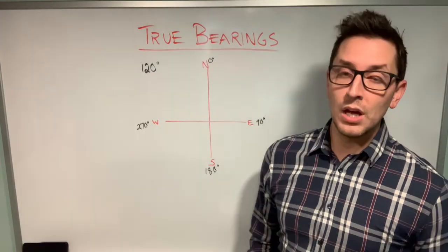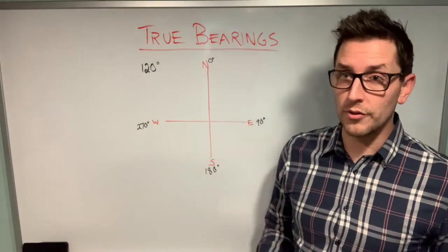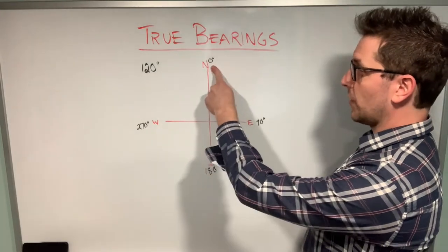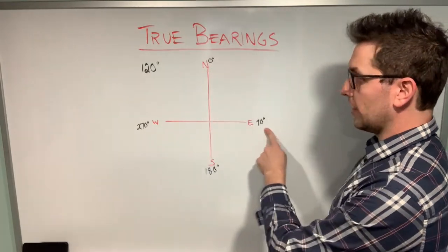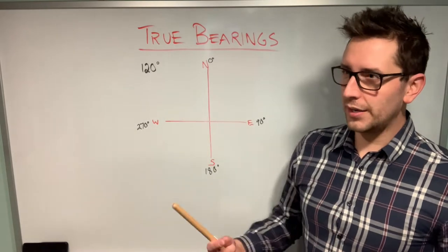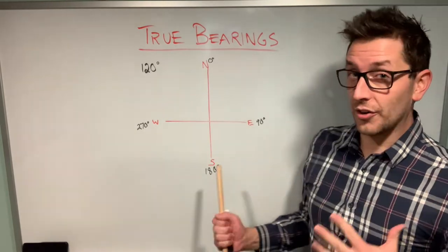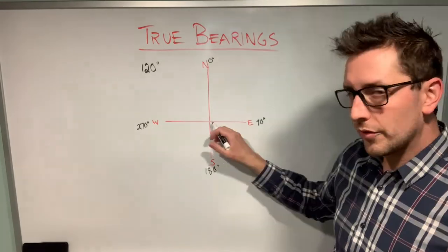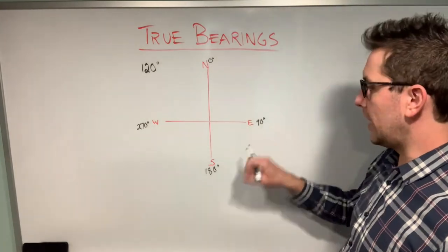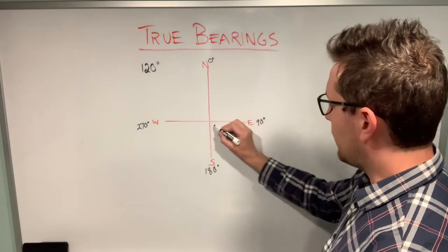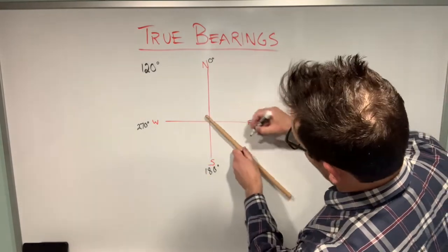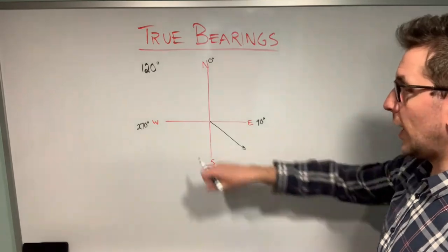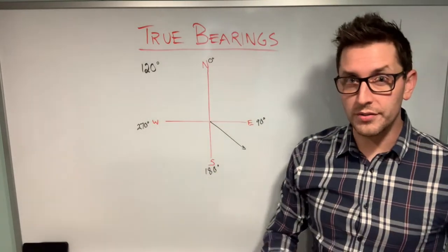To draw 120 degrees without a protractor, start at the northern axis at zero degrees and go past 90 degrees, since 120 is bigger than 90 but less than 180 — specifically about 30 degrees more than 90, so not quite halfway between 90 and 180. I can draw it somewhere about here. This diagram represents a vector drawn at a true bearing of 120 degrees, with this angle being 120 degrees.